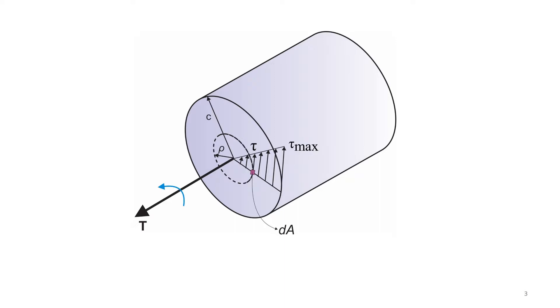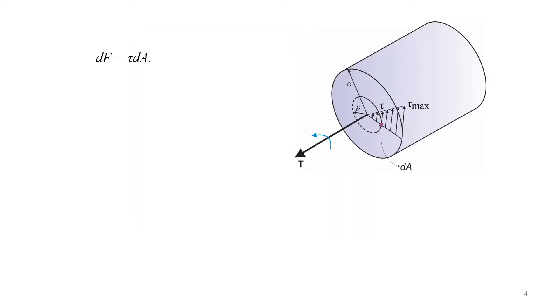Consider a circular shaft loaded in torsion. Each element of dA located at rho is subjected to a force of dF equals tau dA. The torque produced by this force is dT equals rho tau dA.